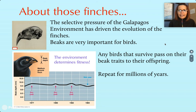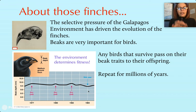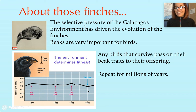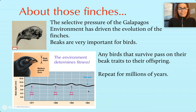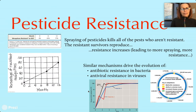The selective pressure of the Galapagos environment has driven the evolution of the finches, and beaks are super important. Current recent research has been able to see slight adjustments in the size of finches' beaks based on whether the years were dry or wet. The dry and wet years determine what plants are more abundant and what size their seeds are, so different sized beaks were advantageous in different years, and they've been able to document those changes in beak size.